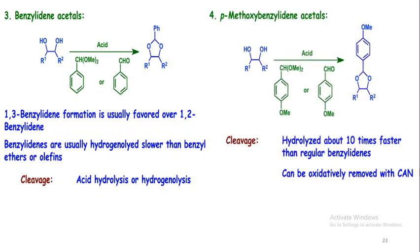The next way for the protection of a diol is by using p-methoxybenzylidene acetal. This can be done by using p-methoxybenzaldehyde or p-methoxybenzyl acetone. It can be deprotected about 10 times faster than the regular benzylidenes, and can be oxidatively removed with CAN.